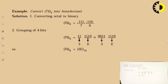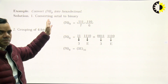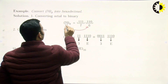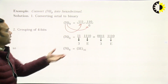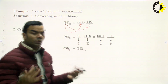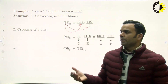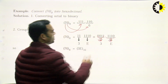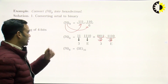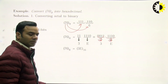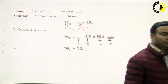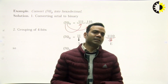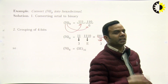For example, convert 76₈ into hexadecimal. Since it is octal, represent each digit by its 3-bit equivalent: 6 by its 3-bit equivalent, 7 by its 3-bit equivalent. Combine the bits, then make groups of 4 bits from the right to convert to hexadecimal. Each 4-bit group is then represented by its hexadecimal equivalent, and the number is converted.